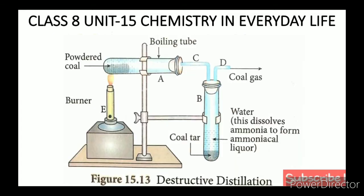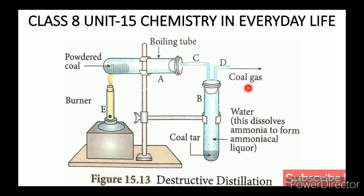The destructive distillation of coal can be carried out in the lab. A is the boiling tube, B is a test tube, C is a delivery tube. For example, 1,000 kg of coal is used. The residue is called coke, the gas is called coal gas. Ammonia is also produced, which dissolves in water to form ammoniacal liquor.